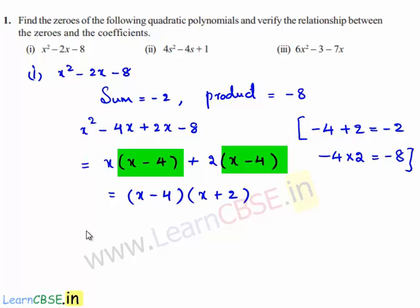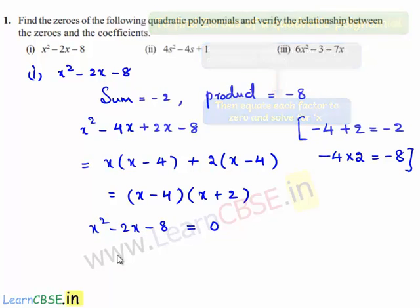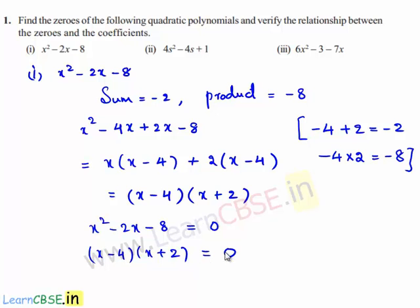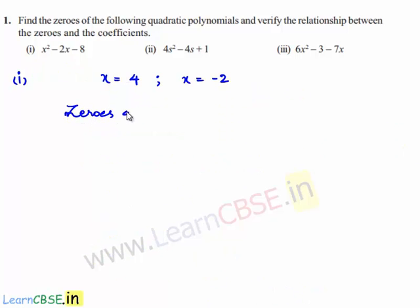In order to find the zeros of the polynomial, the given polynomial x² - 2x - 8 must be equated to 0. So x² - 2x - 8 can be written as (x - 4)(x + 2) = 0. We can say that x - 4 = 0 and x + 2 = 0. Transposing, we get x = 4 and x = -2.